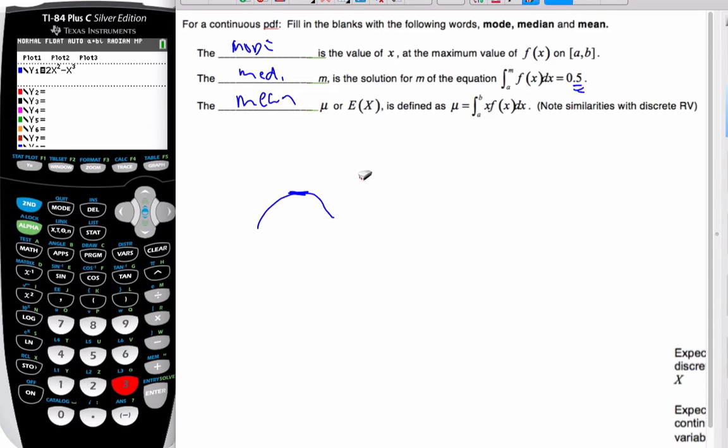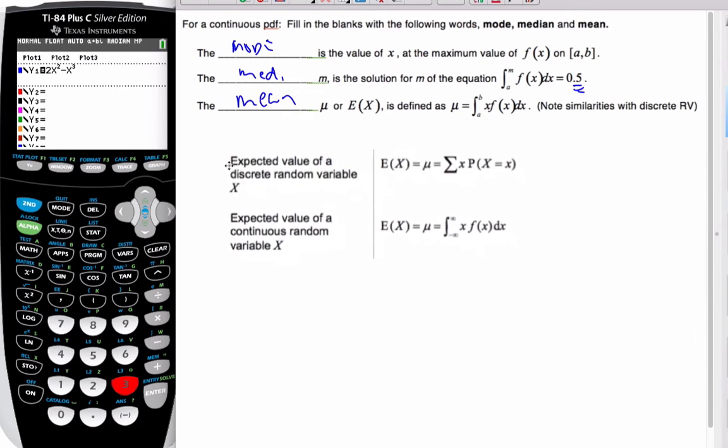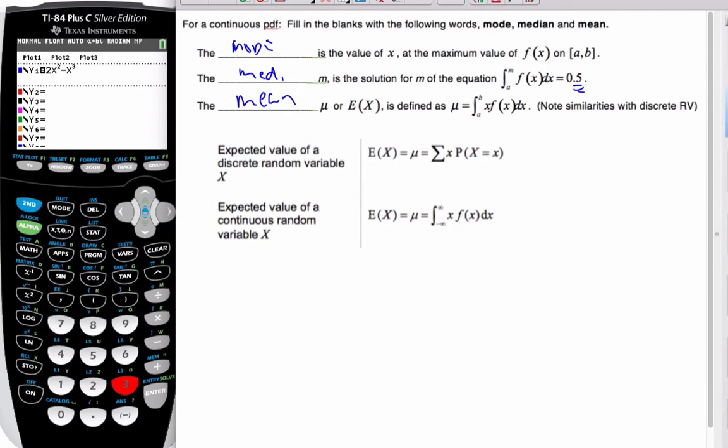And it talks about the similarities between continuous and discrete. Well, here's the formulas for both the discrete and the continuous. And so if you look at this, the discrete takes each individual value, multiplies it by x, and multiplies by the probability, and adds them all up. Well, it takes the x's times the function, which is similar to the probability idea, because the area underneath the function adds up to one, whereas these probabilities add up to one. And then I add, or I take the integral between these two values, two extremes. And so there's lots of similarities here.